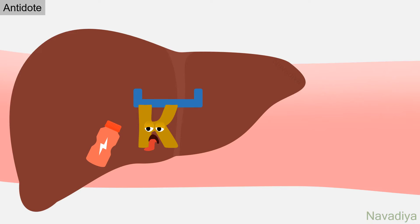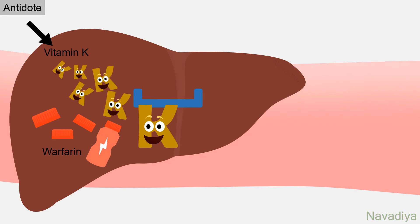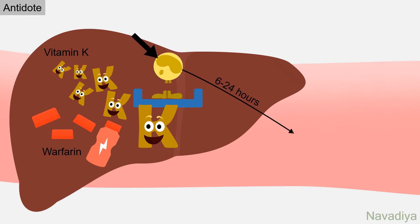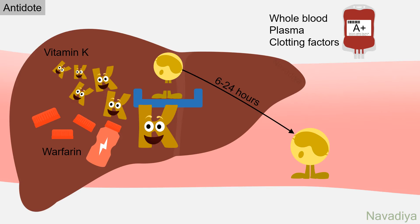The antidote for warfarin overdose or excessive bleeding is vitamin K — it is the specific antidote. However, since synthesis of clotting factors takes time, the response to vitamin K appears after 6 to 24 hours. For an immediate response, you can give whole blood, plasma, or concentrates of clotting factors to replenish them immediately.